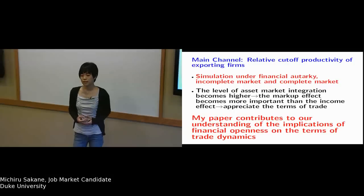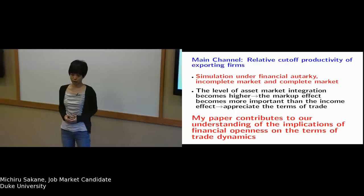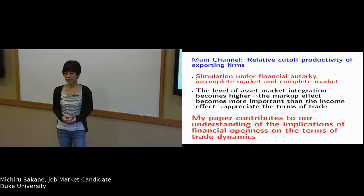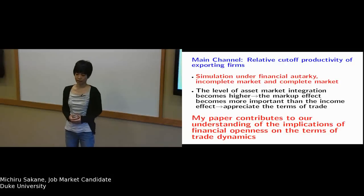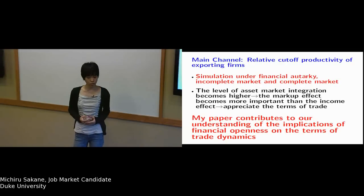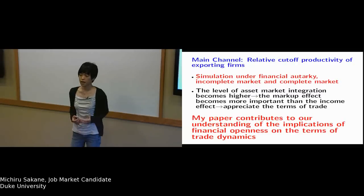I simulate the model under three cases of asset market structures: financial autarky, incomplete asset market, and complete asset market. Under financial autarky, the income effect is higher than the markup effect.